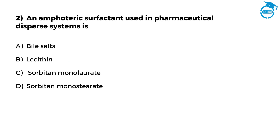An amphoteric surfactant used in pharmaceutical disperse systems is. Option A: Bile salts. Option B: Lecithin. Option C: Sorbitan monolaurate. Option D: Sorbitan monostearate. You have got 7 seconds — mention your answer in the comments.